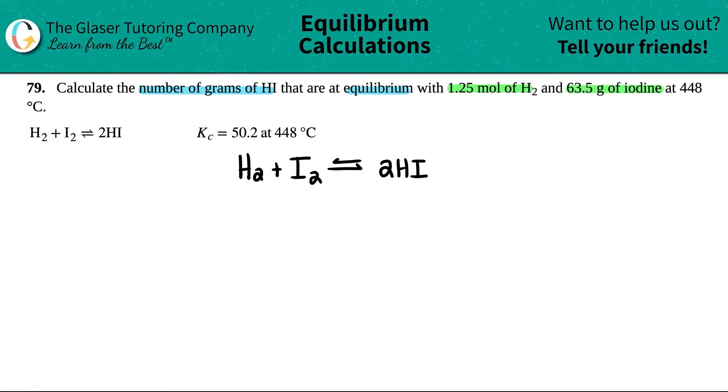Now the thing that they didn't tell me were the states of this so there should be states here. In order for this to work I'm just going to assume that all three of these are gases. Just makes it easier and we're going to use all of these in our Kc expression. Now let's just write out what they gave us. Well they said that we started off with 1.25 moles of H2 so I have H2 right here I have 1.25 moles and maybe I'll move this over a little bit.